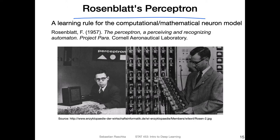The perceptron is kind of like a model. The model was already proposed by McCulloch and Pitts as a mathematical model of a neuron in the human brain, so at least it was inspired by this biological neuron. The perceptron, to be more specific, is a learning rule for the computational mathematical representation of the neural model.